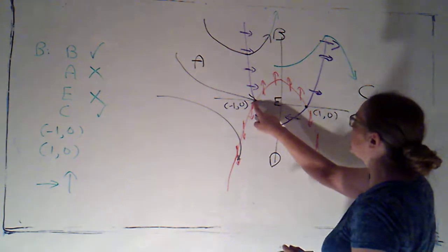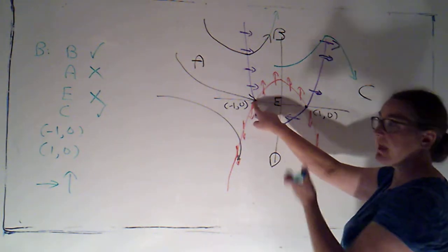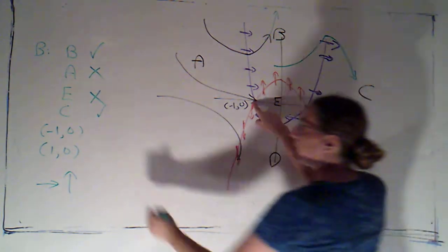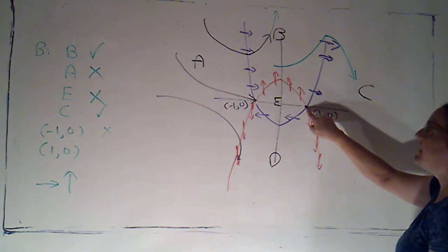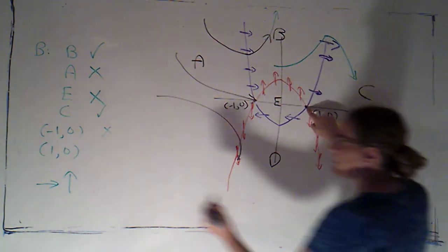Could I approach negative 1, 0? No. It's at the bottom, and if I'm in B, I'm going up. Could I approach 1, 0? No. It's at the bottom, and if I'm in B, I'm going up.